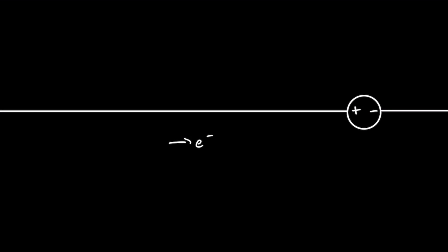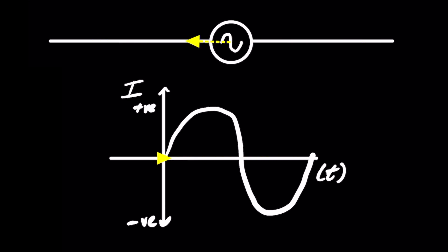Ask yourself: if electrons move towards a power source, how can conventional current transfer energy away from that same source? And if an alternating current is constantly changing direction, how is it even possible that energy moves in one certain direction? Before we can dive into what determines the direction of energy transfer, we first need to talk about why the convention is the way it is — and it all comes down to a historical assumption.